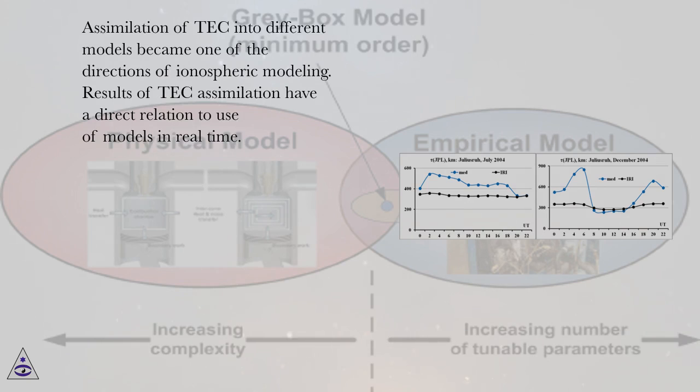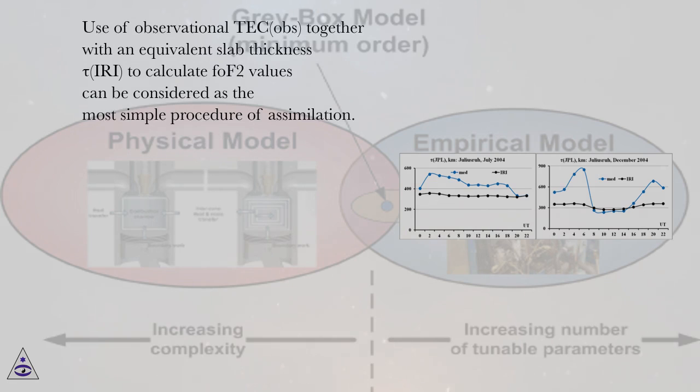Assimilation of TEC into different models became one of the directions of ionospheric modeling. Results of TEC assimilation have a direct relation to use of models in real-time. Use of observational TEC OBS together with an equivalent slab thickness tau IRI to calculate FOF2 values can be considered as the most simple procedure of assimilation.